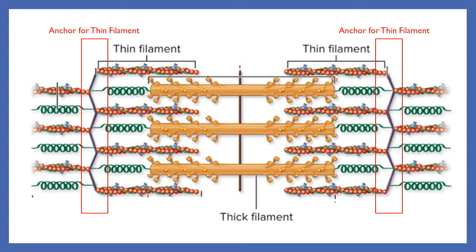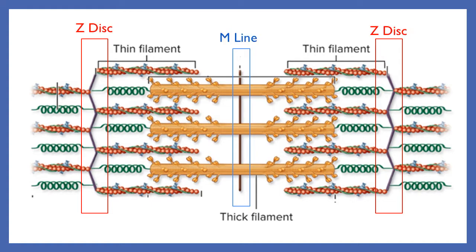We have an anchor for our filaments. The thin filaments are anchored to the line shown inside these red boxes, and the anchor for the thick filament is shown in this blue box. The actual names for these anchors are the Z-disc for the thin filament anchor, and the M-line — think of the middle — for the thick filament anchor.